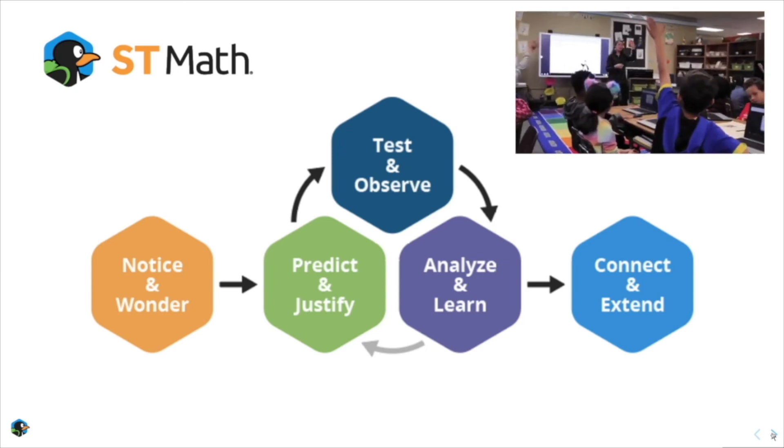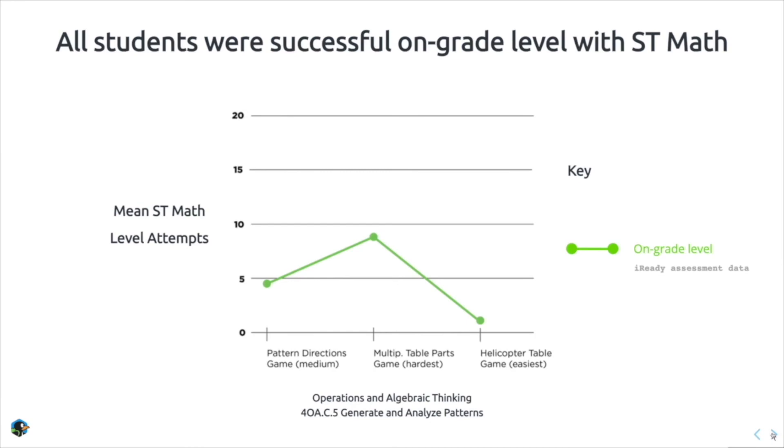Let's look at one of the effects of this type of learning process: the accessibility for all students. Here we can see students who were assessed at being on-grade level, and on average, how many times it took them to solve certain ST Math games. Some games are trickier than others. But what's remarkable is that even students who were assessed at being one grade level behind were also able to achieve mastery of this on-grade level content. They just needed more time.